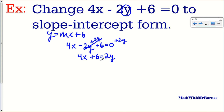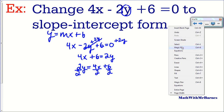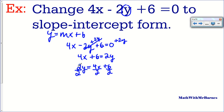A lot of students really dislike it when the Y is on the right side because they're so used to seeing it on the left side. So all you do at this step is just reverse it: 4X plus 6 equals Y. And then we can't have anything in front of the Y, so we divide every single term by 2. That way I keep the equality of the equation. This becomes Y equals — 4 divided by 2 is 2 — 2X plus 3. And there it is, this is my slope-intercept form.